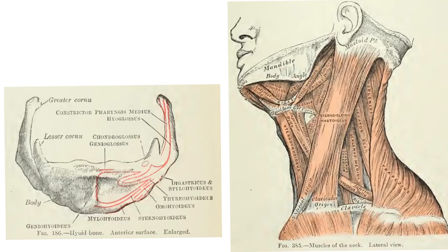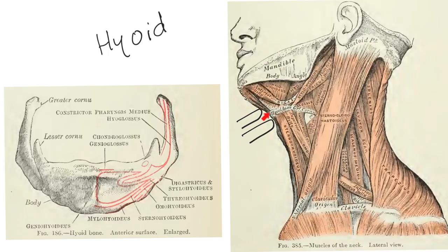Another bone not counted is the hyoid bone. You can find your hyoid bone at the top of your neck, or at the base of your mouth. If you place two index fingers at this part of the neck, you can actually feel the hyoid bone and even move it right and left. The hyoid bone has a body, two greater horns, and two lesser horns.